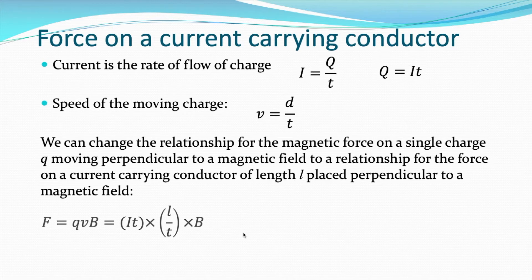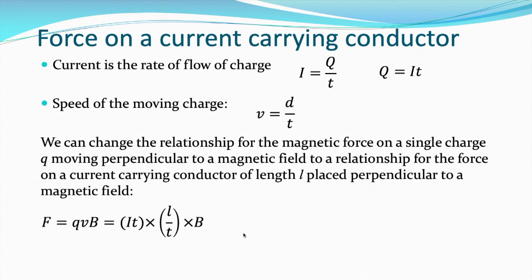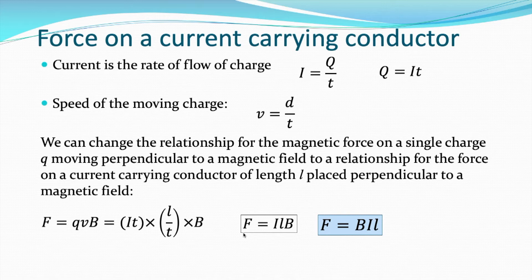Starting with F equals QVB, we substitute in Q equals IT, and V equals the length of the conductor in the field divided by the time it takes to travel through. The two T's cancel out, and we're left with F equals ILB — sometimes written as F equals BIL. B is the size of the magnetic field or magnetic induction, I is the current, and L is the length of the conductor in the field.